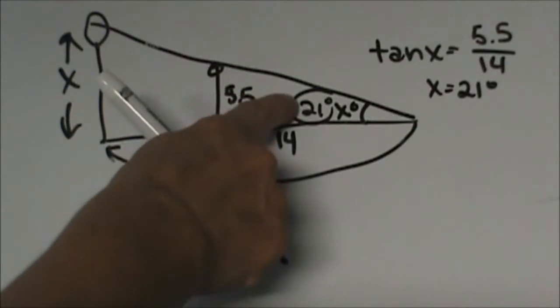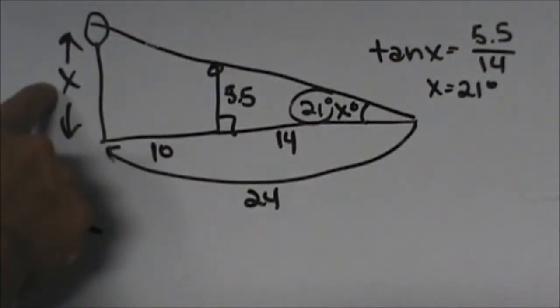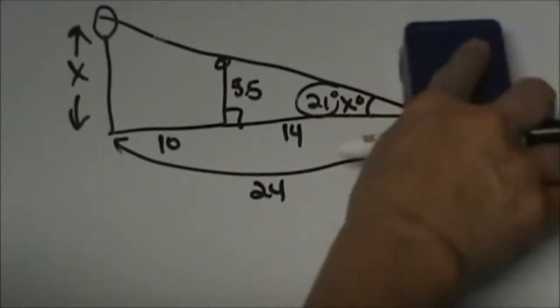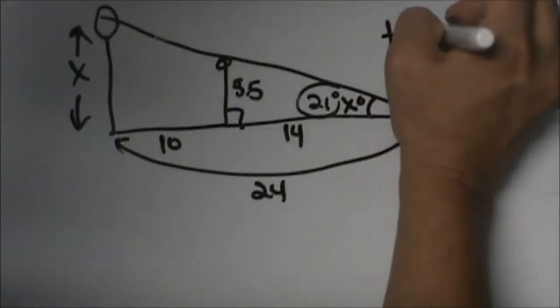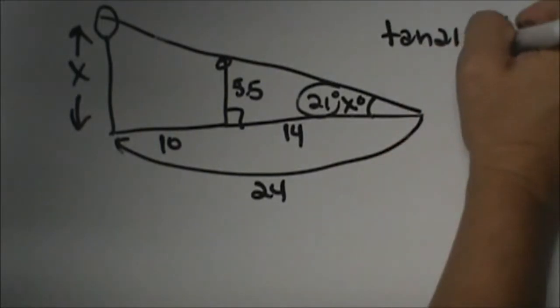So we're going to take the tangent of 21 is equal to the opposite x over the adjacent, which is 24. So let's change this up a little bit. The tangent of 21 is equal to the opposite over the adjacent.